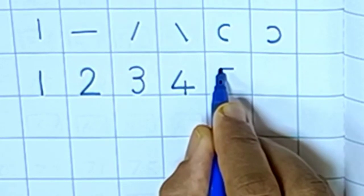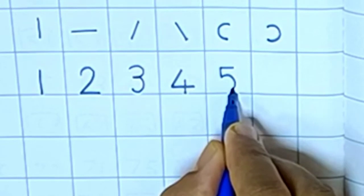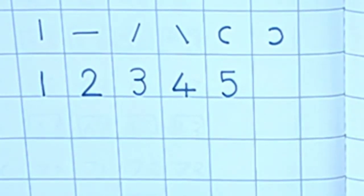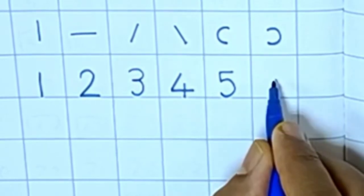Then 5. Sleeping line, small standing line, and a curve, right curve. This is number 5.